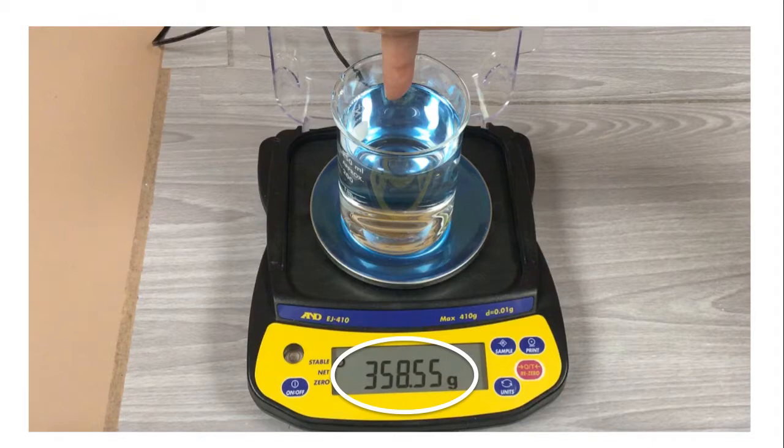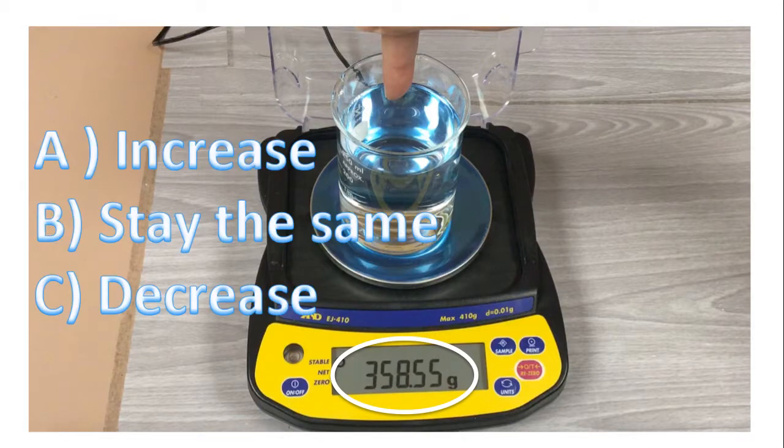Right now the mass as registered by the scale records 358.55 grams. That's the mass of the water in the beaker. And the question is, what's going to happen to that mass? What's going to happen to the 358.55 grams when I put my finger just in the water?